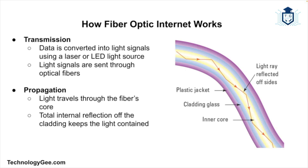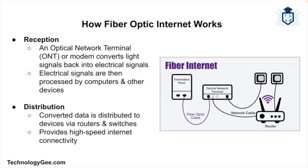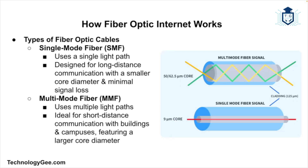This phenomenon is known as total internal reflection. Then there's reception — at the receiving end, an ONT (optical network terminal) or a modem converts the light signals back into electrical signals that can be processed by computers and other devices. Then there's distribution — the data is distributed to various devices within the network through routers and switches, providing high-speed internet connectivity.